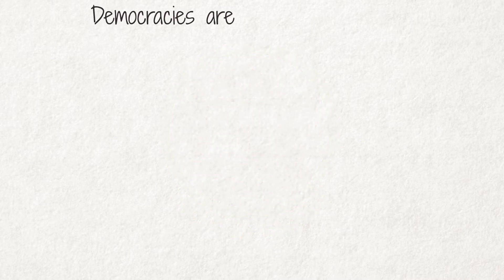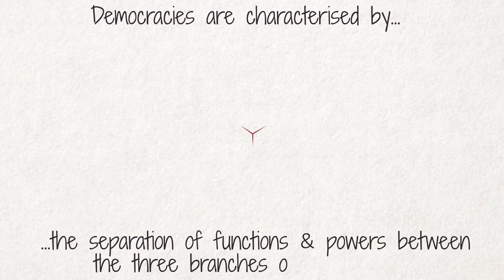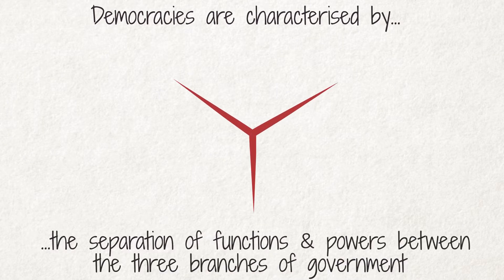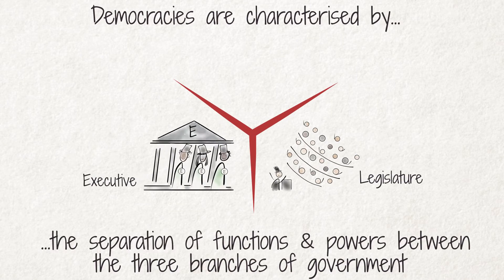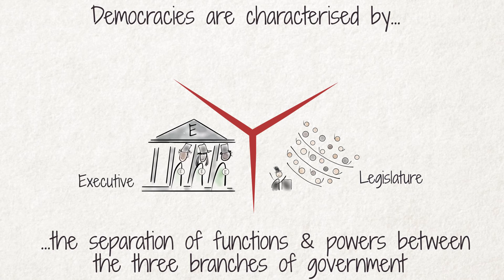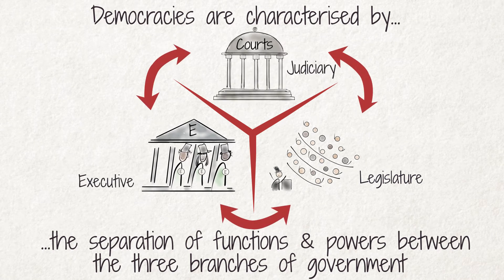Democracies are characterized by the separation of functions and powers between the three branches of government: the legislature, the executive, and the judiciary. Each branch checks the power of the other two so that there is a balance of power between them.